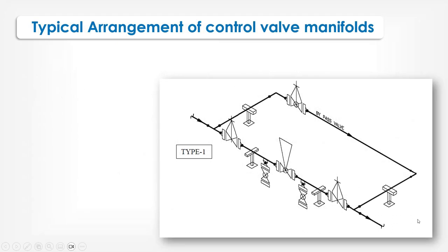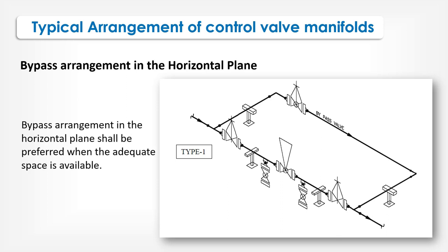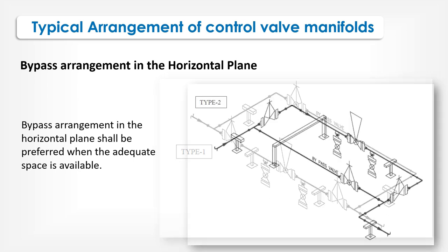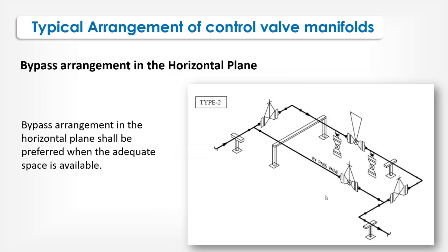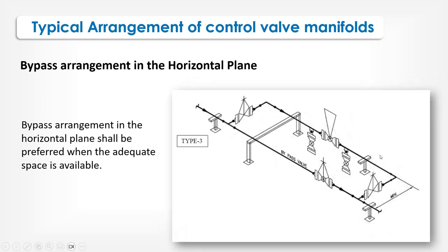A typical arrangement of control valve manifolds — bypass arrangement in the horizontal plan. Bypass arrangement in the horizontal plan shall be preferred when adequate space is available. This covers Type 1, Type 2, and Type 3 arrangements.